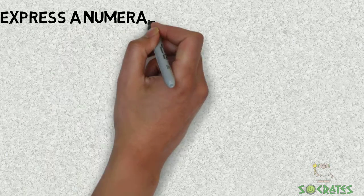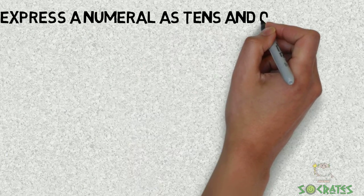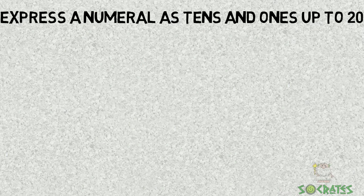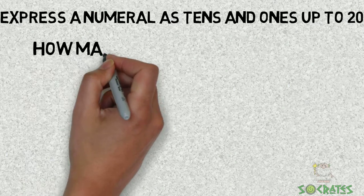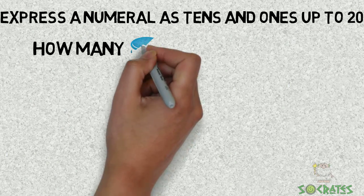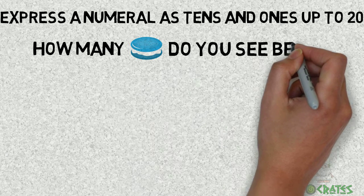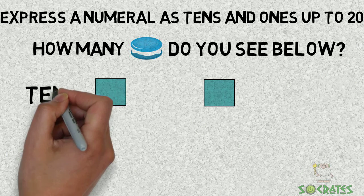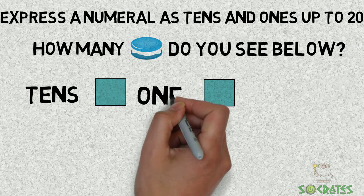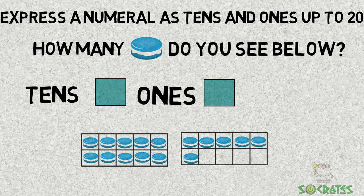Express a numeral as tens and ones up to 20. How many cookies do you see below? We're gonna break it into tens and ones.